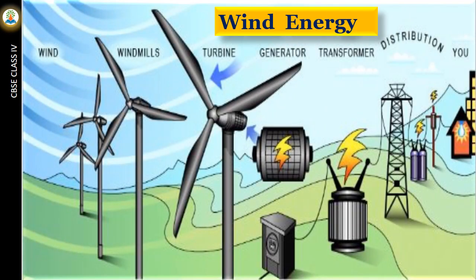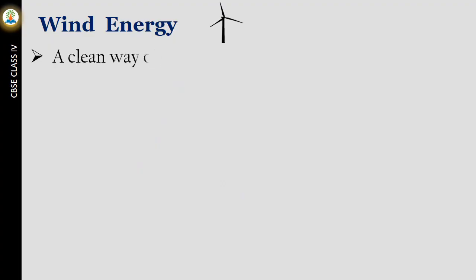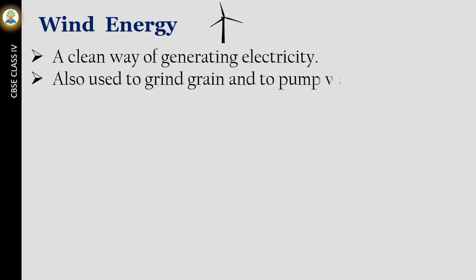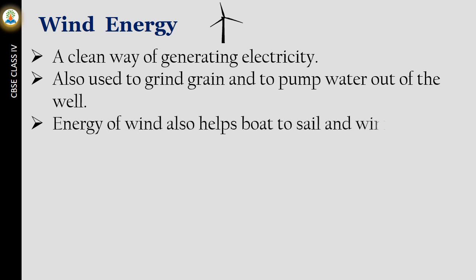The energy of moving air can be used to rotate a windmill. When windmill rotates, it moves machines called turbines which generate electricity. Wind energy is a clean way of generating electricity. Also used to grind grain and to pump water out of the well. Energy of wind also helps boat to sail and winnow the chaff from grains.